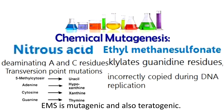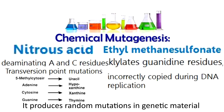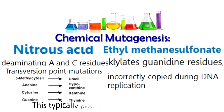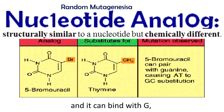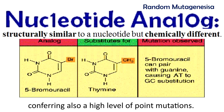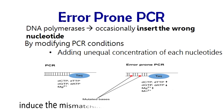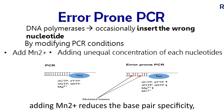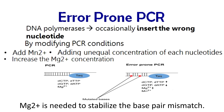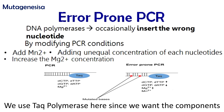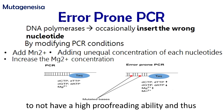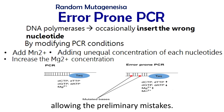EMS is mutagenic and also teratogenic. It produces random mutations in genetic material by nucleotide substitution, particularly by guanylation. This typically produces only point mutations. Bromacyl is an analogue for thymine and is combined with G, conferring a high level of point mutations. Adding unequal concentrations of nucleotides will induce the mismatching probability during PCR. Adding Mn2+ reduces the base pair specificity, and Mg2+ is needed to stabilize the base pair mismatch. We use Taq polymerase here since we want the components forming the mutated sequences to not have high proofreading ability, and thus end up not correcting errors, allowing the preliminary mistakes.